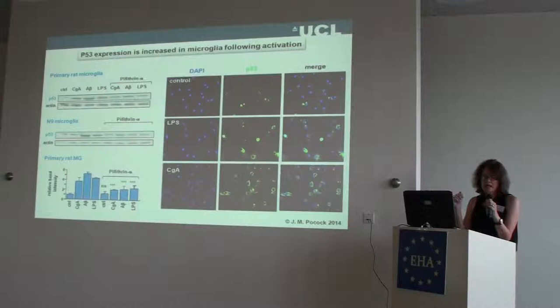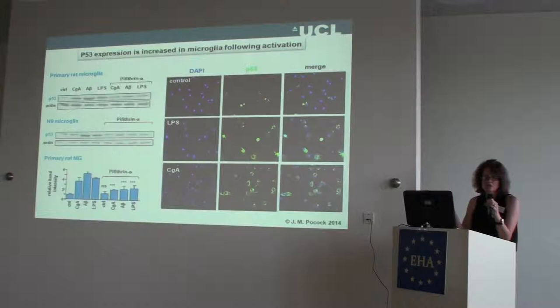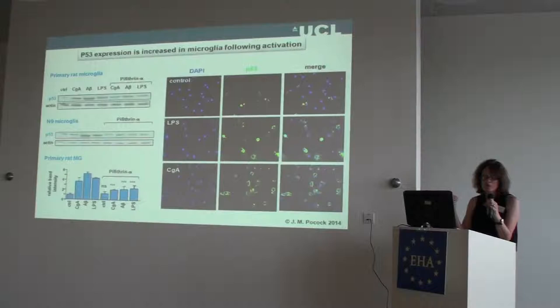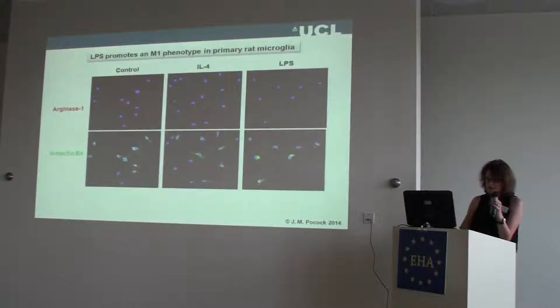LPS is a classic stimulator of microglia — it goes through toll-like receptor 4. TLR4s actually show a drop in expression with ageing, but the compensatory mechanism is that you start to see more microglia in the hippocampus. So there are cells with toll-like receptor 4, just not so much expressed per cell. When you activate in these ways, you get a pro-inflammatory M1 classical activation phenotype. They start producing inflammatory cytokines, and they start overexpressing P53. We can block this with the translocation inhibitor pifithrin-alpha.